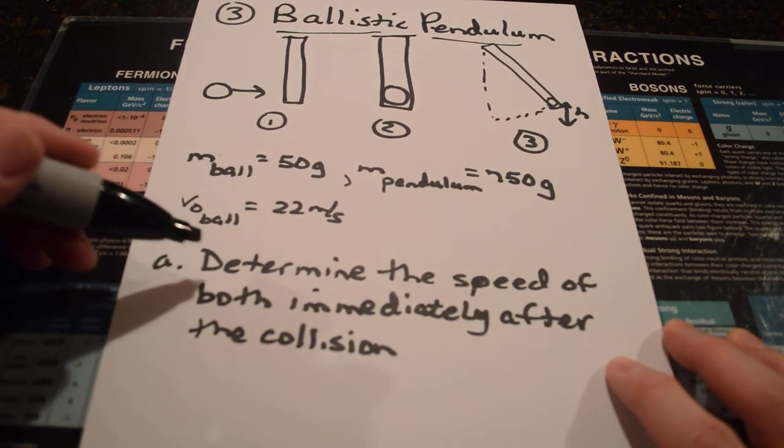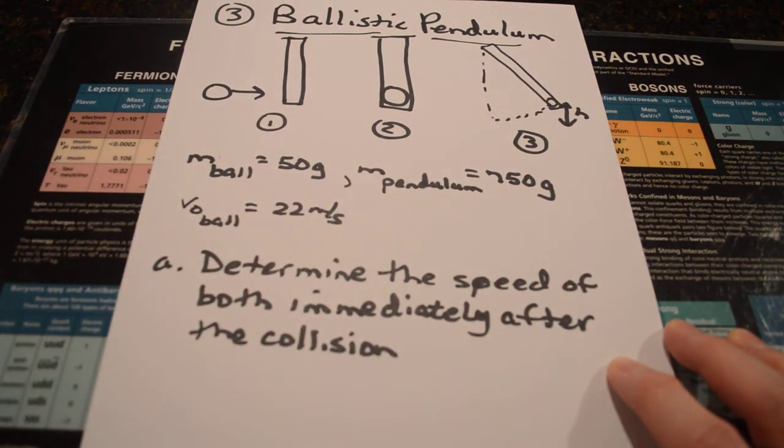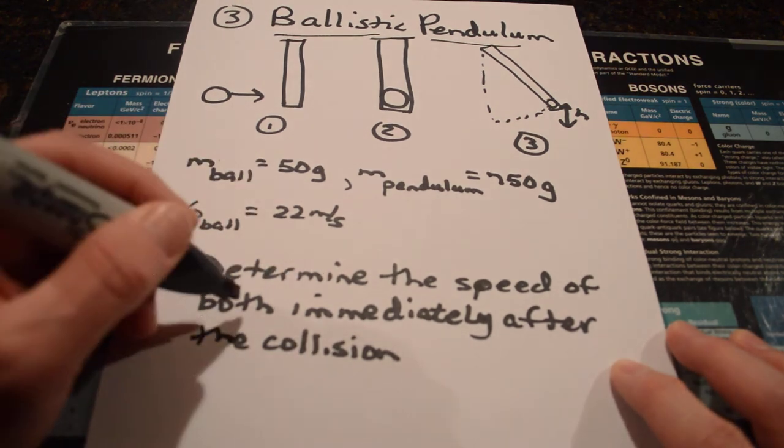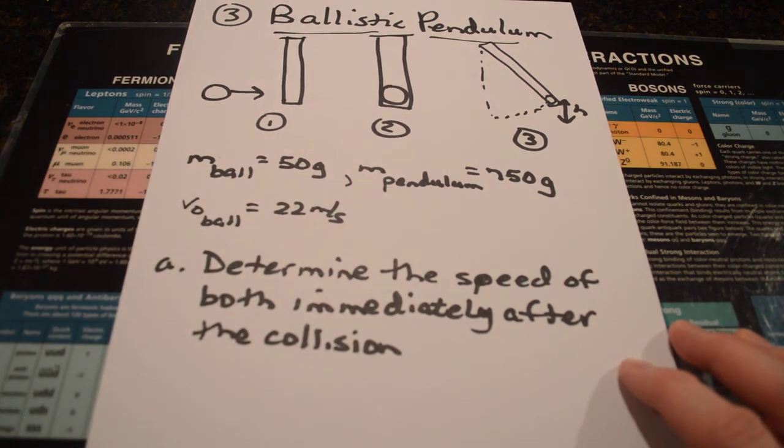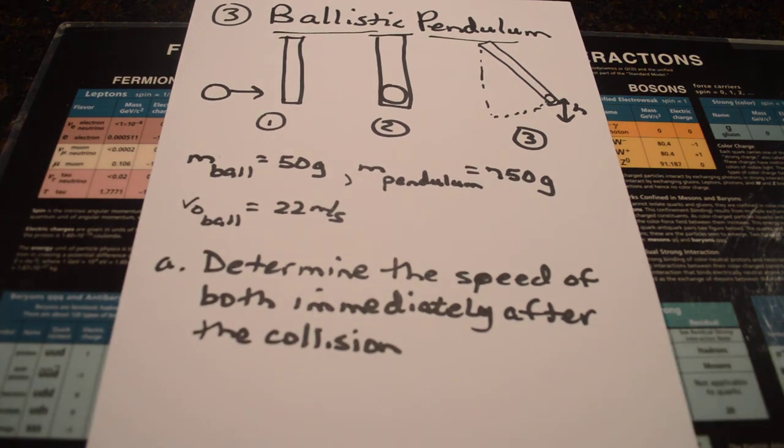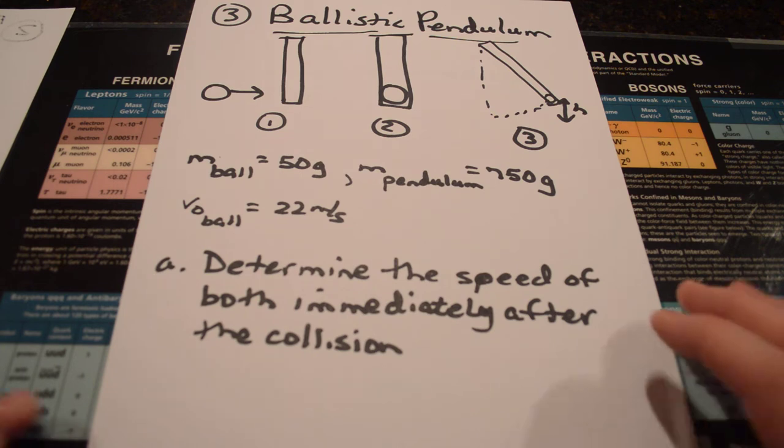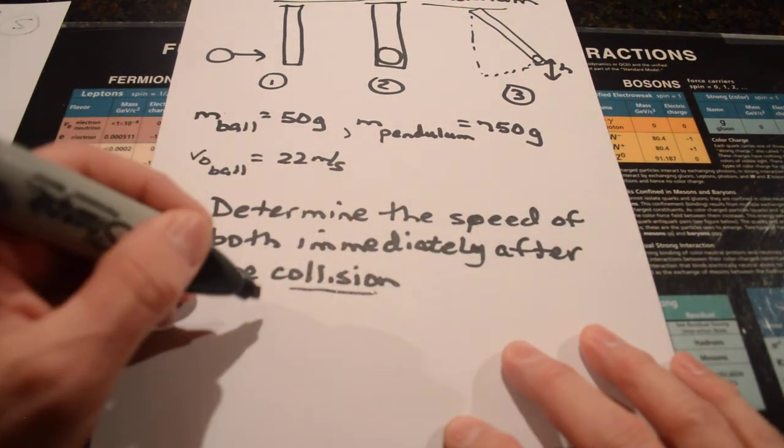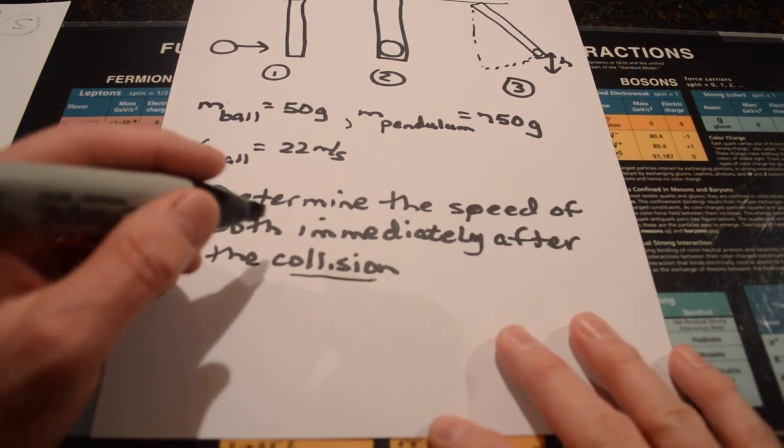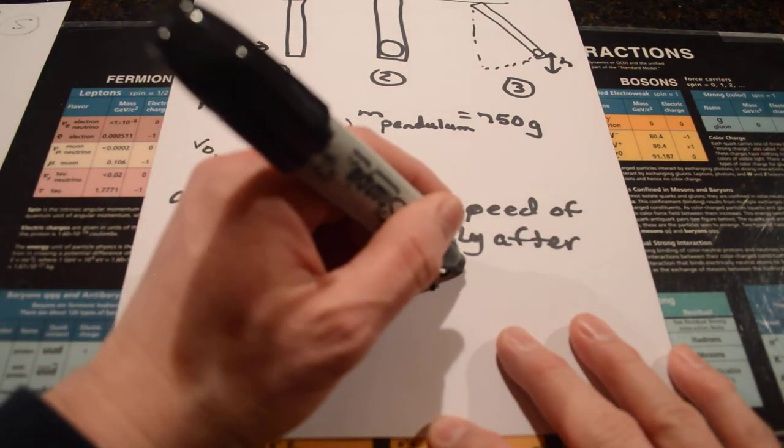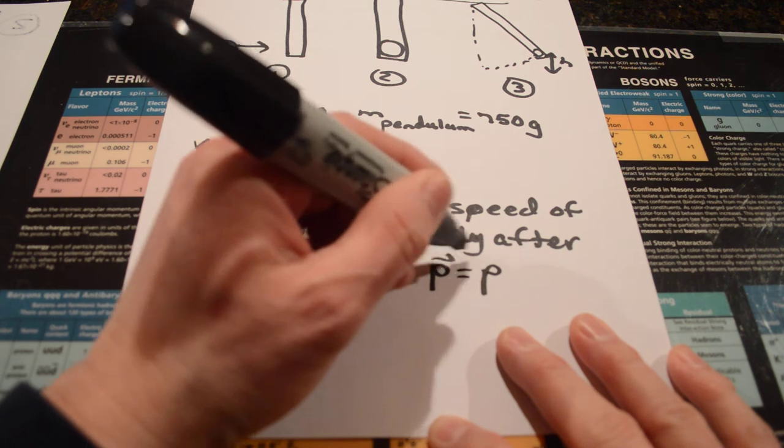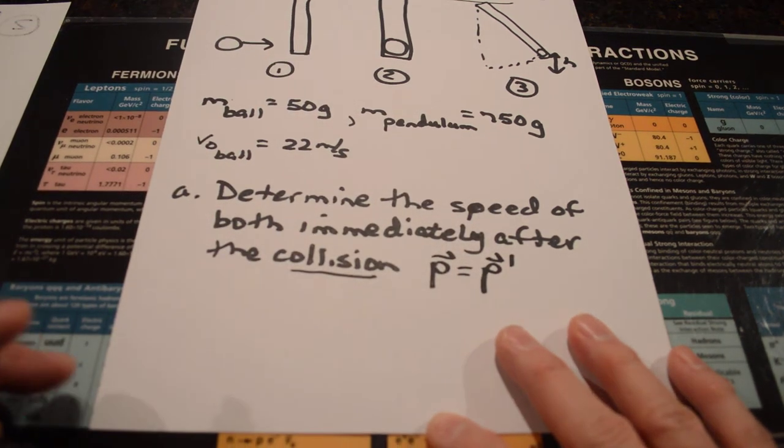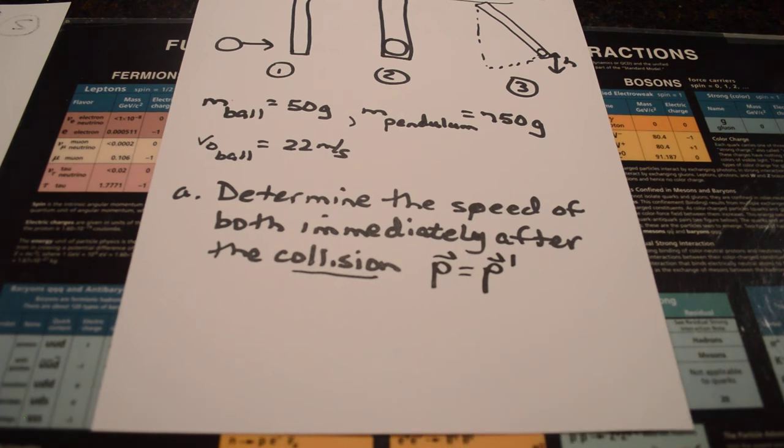And so, the first part of this is to say, determine the speed of the collision immediately, or the speed of both of them immediately after the collision. So, if you haven't tried it yet, why don't you pause it and take a quick second and see if you can do that. If it says collision, I think that's the type of situation where you immediately use momentum conservation.